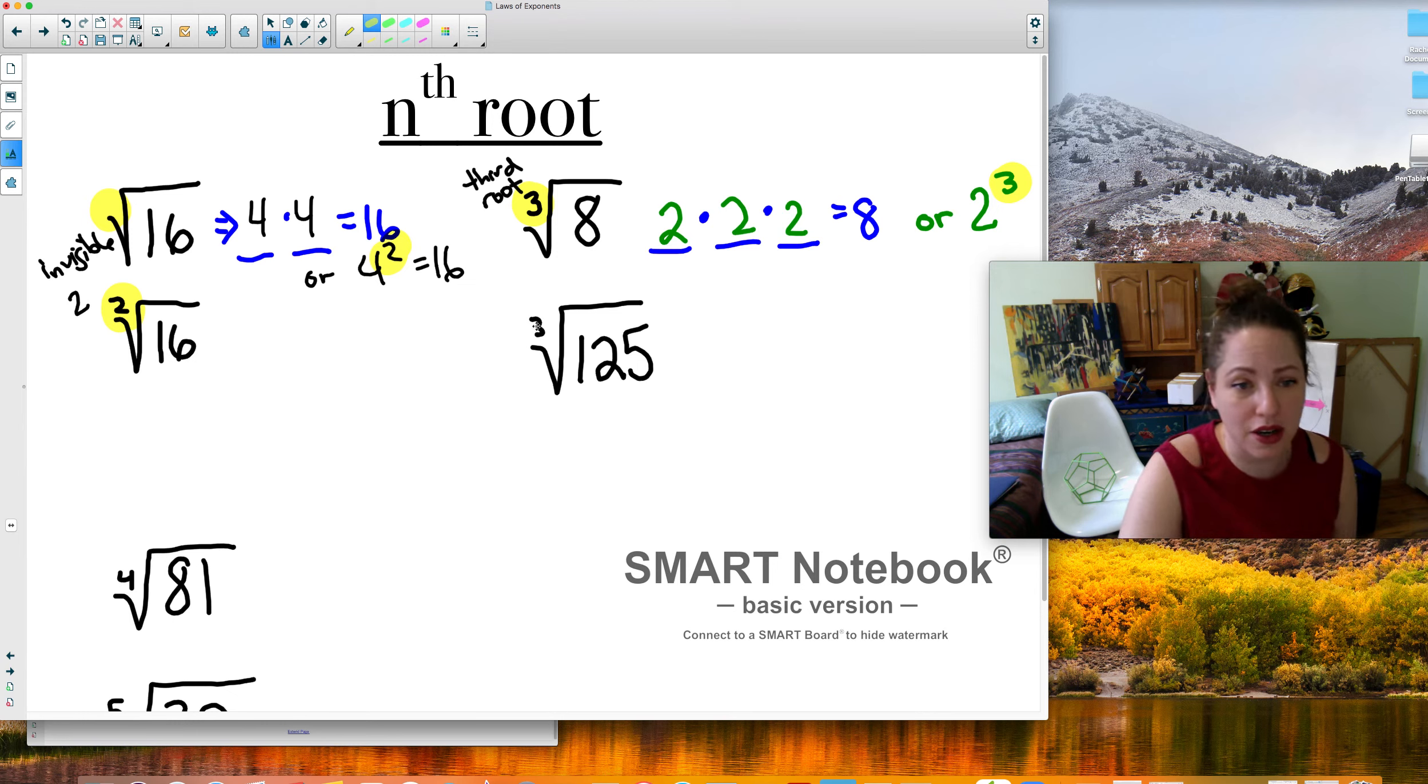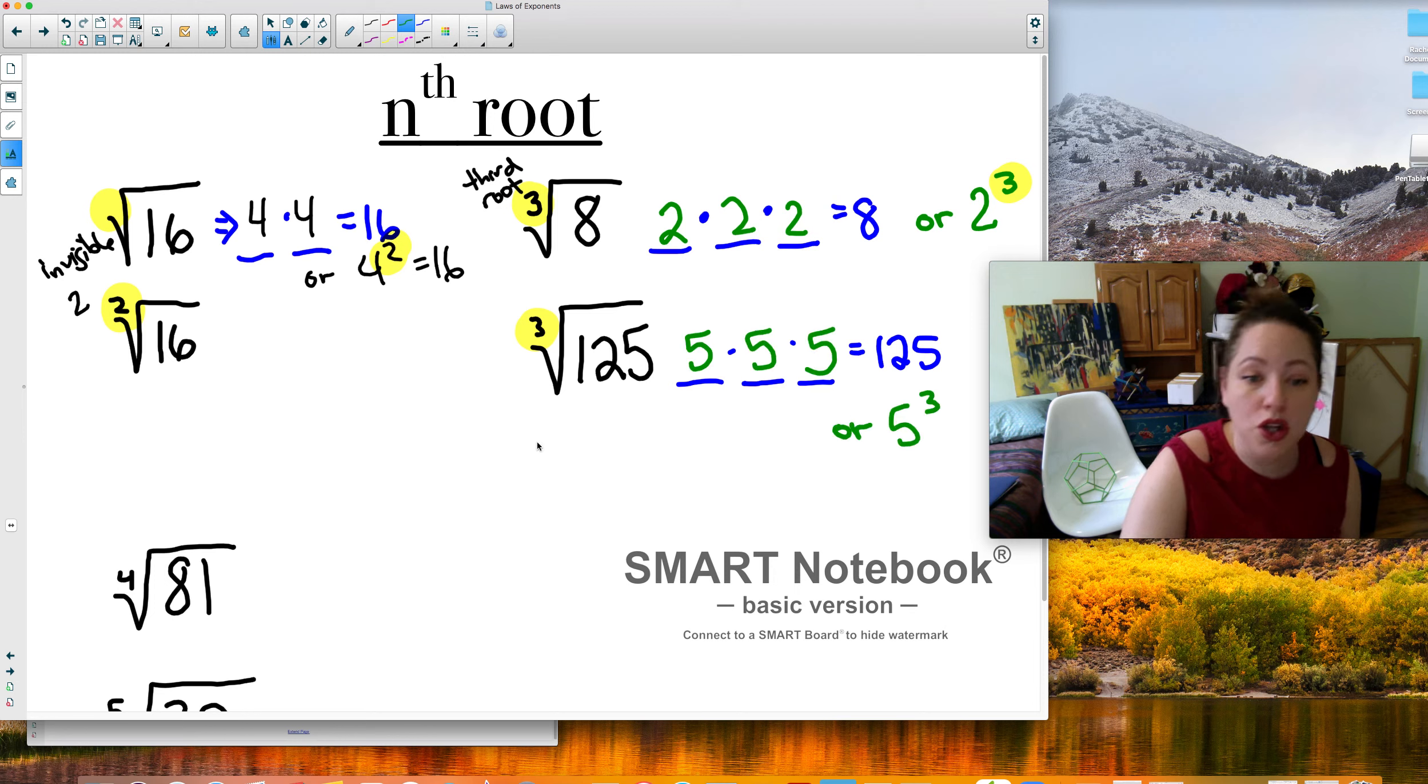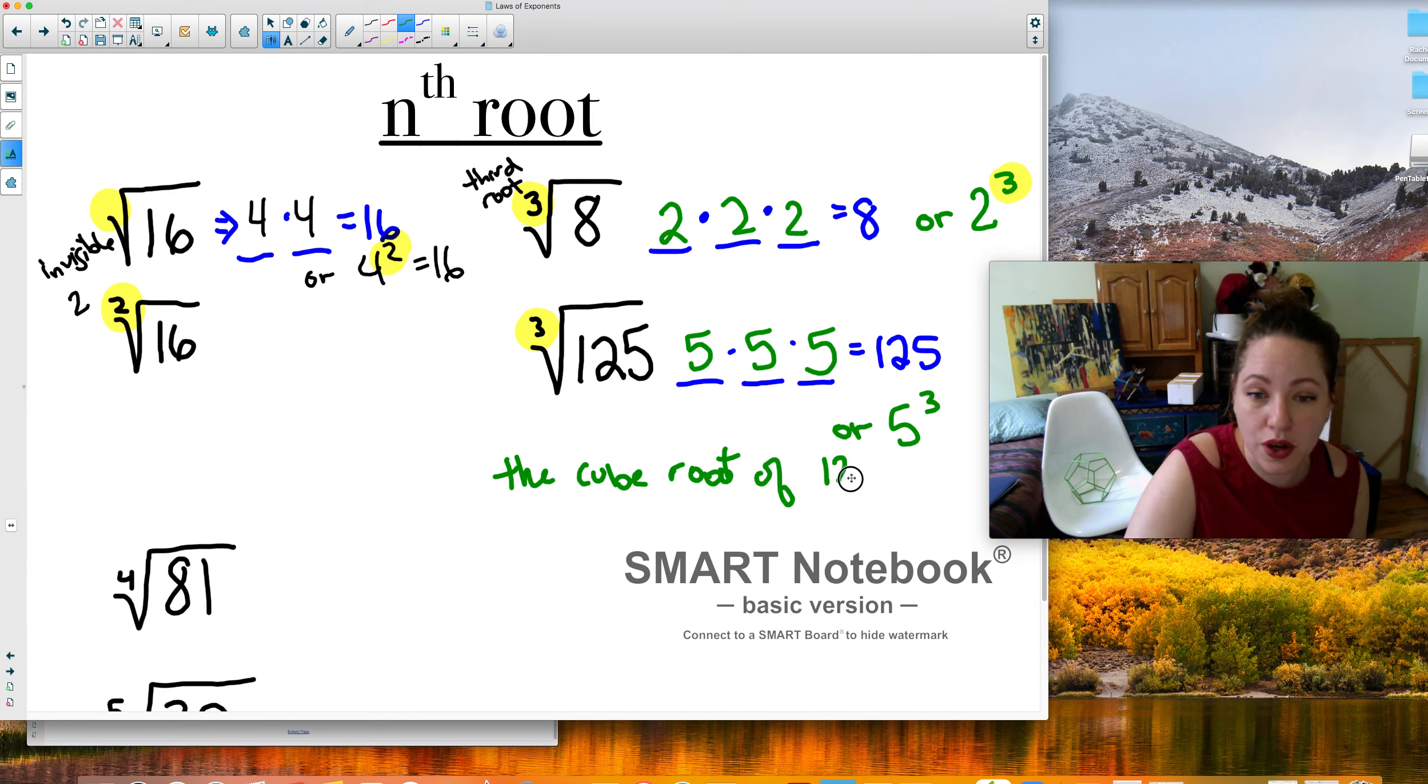The last one, or another one we'll look at here, is the cube root of 125. So what number times itself 3 times equals 125? Use your calculator for a second and you'll find out that it's 5. 5 times 5 times 5, or 5 to the third power.